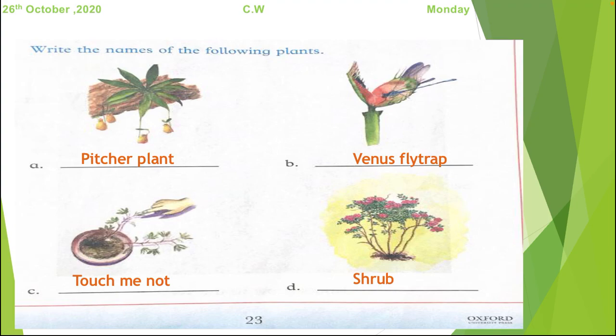The fourth one is rose plant. And what are rose plants? They are not tall. They are not small. They are in medium length. So these plants are shrubs. Very good.